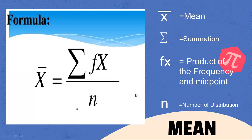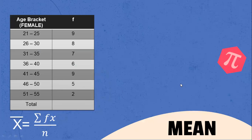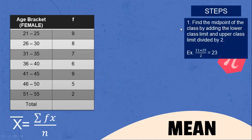Let's now try to apply this formula on the given example. Given here the age bracket of the female respondents: there are nine females aged 21 to 25, eight females aged 26 to 30, seven females aged 31 to 35, six females aged 36 to 40. The first step is to find the midpoint of the class by adding the lower class limit and upper class limit divided by 2.